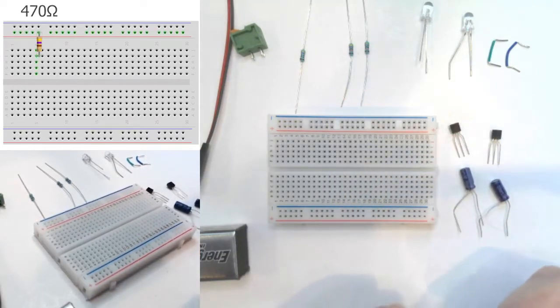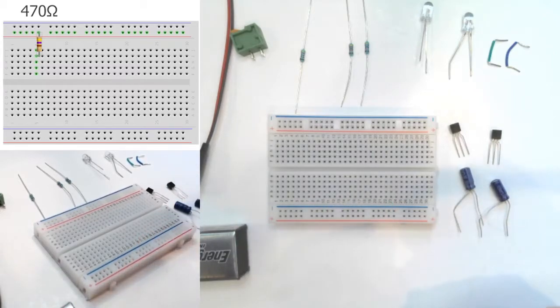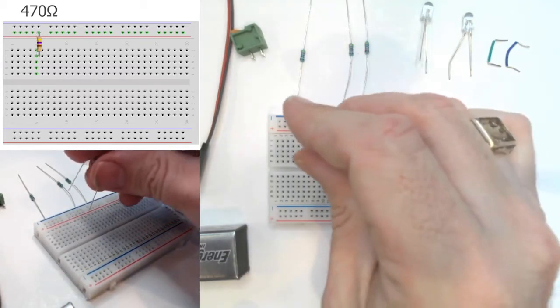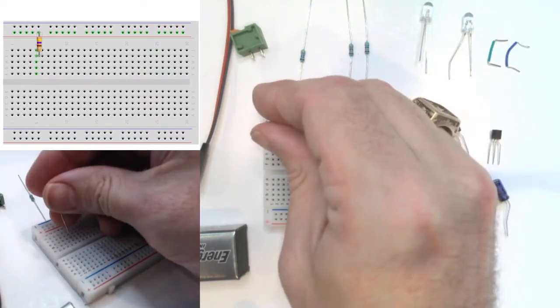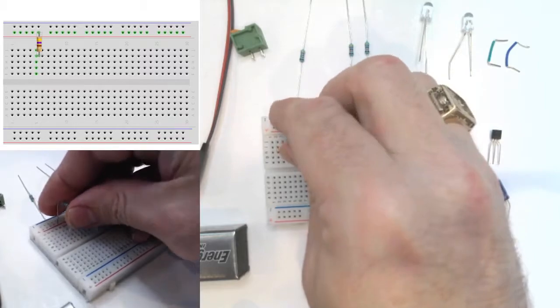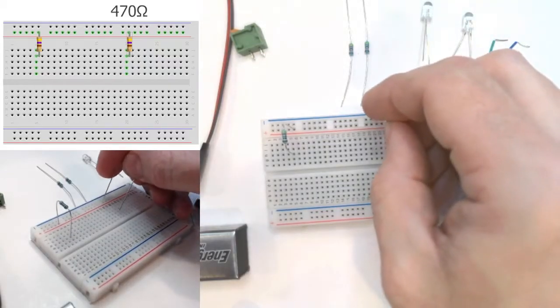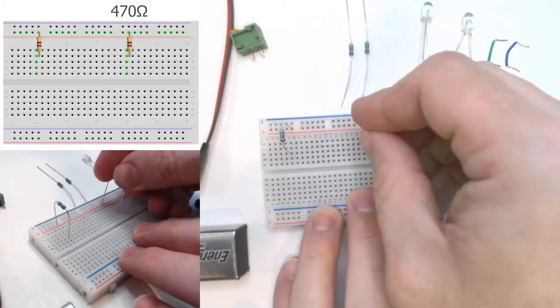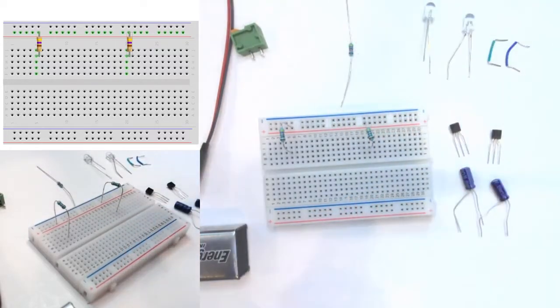To do that, it makes it easier if you can fold the resistor over like that so that the leads are perpendicular to the resistor, and then you can stick this in there. We'll do the same thing for the other 470 ohm resistor, and then we will put in the 47k ohm resistors.